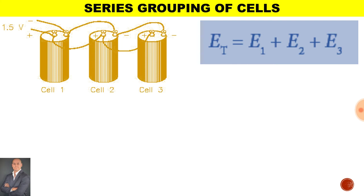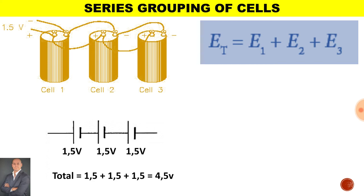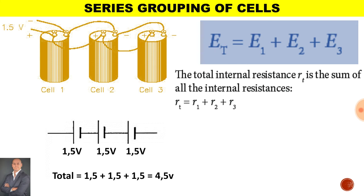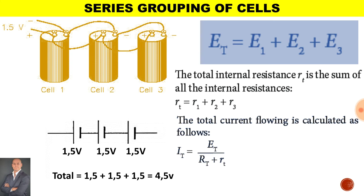When connecting cells in series, to calculate the total EMF it will be the sum of the EMF for each cell. Therefore 1.5 plus 1.5 plus 1.5 gives a total EMF of 4.5 volts. To calculate the total internal resistance, it will be the internal resistance of each cell added together. To calculate the total current throughout the circuit, it will be the total EMF divided by the resistance total, which is the sum of the external load resistor plus the total internal resistance.